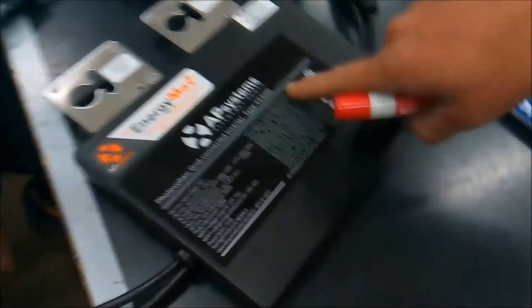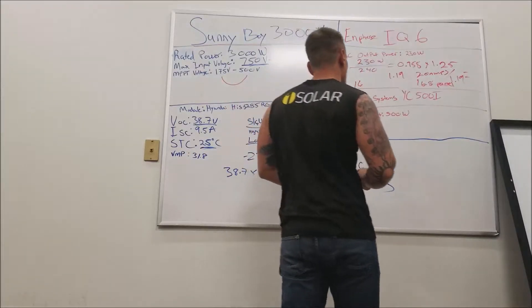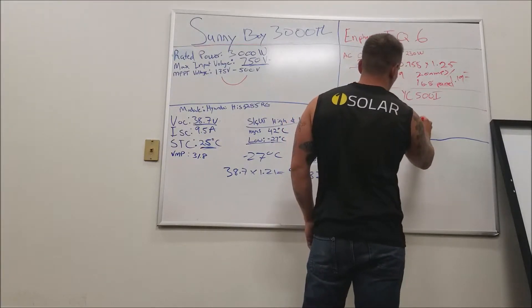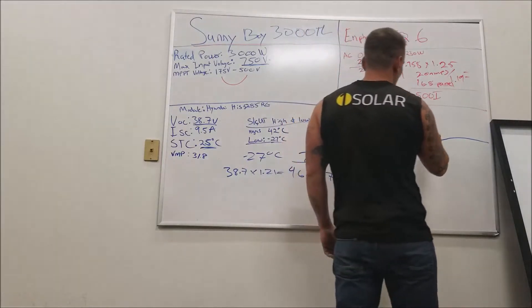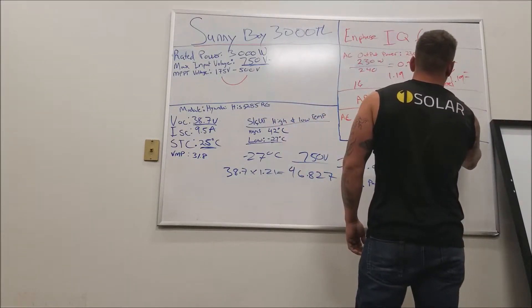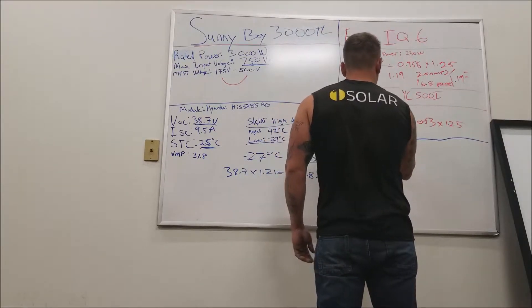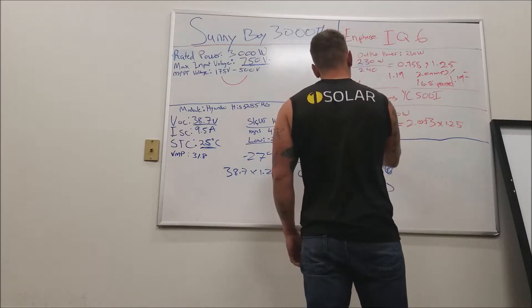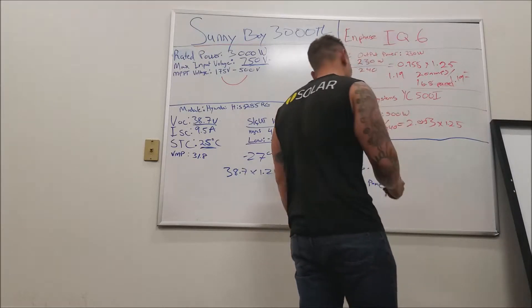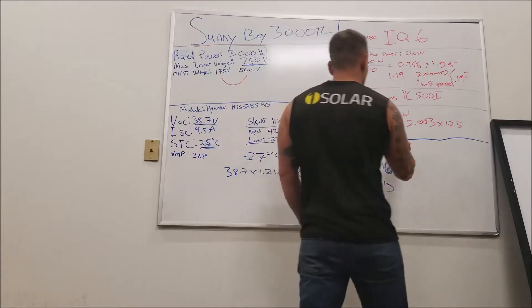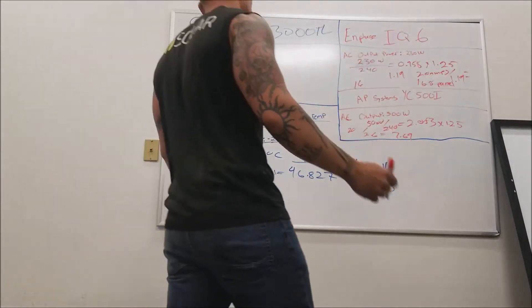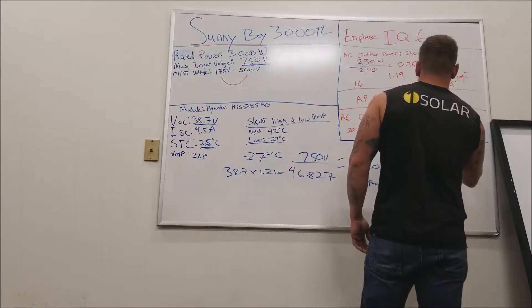AP Systems is a little bit different — this is actually two microinverters in one. It's 500 watts, or 250 watts a side. Same thing: 500 watts divided by 240 volts gives us 2.083 amps. Multiply that by 1.25 for continuous current — that jumps us up to 2.6 amps. Again, 12-gauge wire, so 20-amp overcurrent protection. 20 divided by 2.6 equals 7.69, so we can have seven AP Systems microinverters.